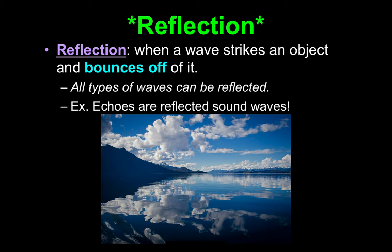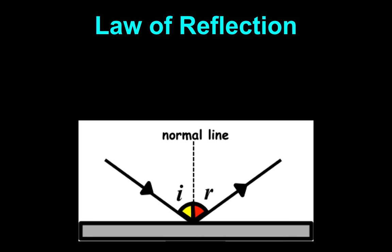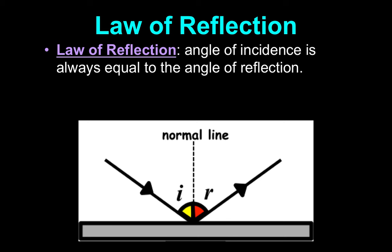Now the law of reflection — this relates to a station we did on Friday. Just by the picture, can you visualize one of the stations where you had a light going in at an angle? The law of reflection states that the angle of incidence is always equal to the angle of reflection. So whatever angle your wave starts at, it will be reflected back at that same angle. Can you think of a station on Friday where you held something at an angle, it bounced off something, and reflected back at an equal angle?